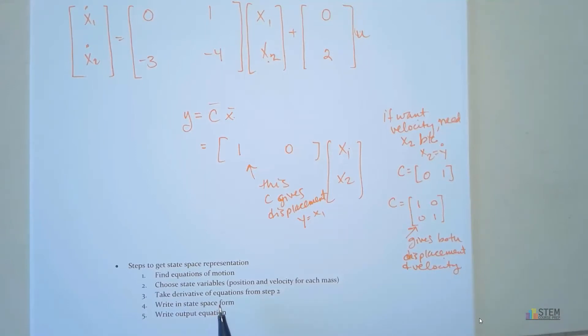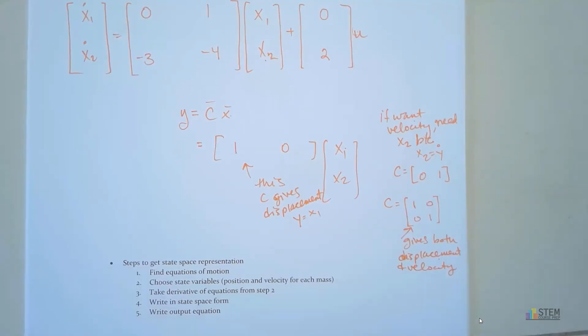Now, what you're going to do is, once you have your state vector, you're going to take the derivative of your equations from step two. Then you'll write it in state space form. And then, finally, after that, figure out what you want for your output and determine what the C matrix should be. So that way, you can write the y equals cx equation.